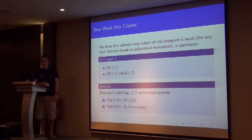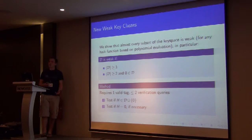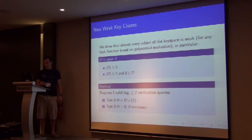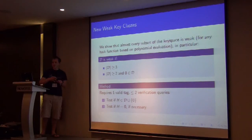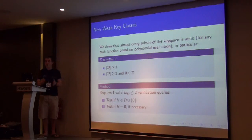And what we show is actually, there's loads of these weak key classes. So D is weak if there's more than three elements in it. Or if your set is the zero key and one other key. And we're going to do this by testing whether, use this simple method for constructing your forgery polynomials.